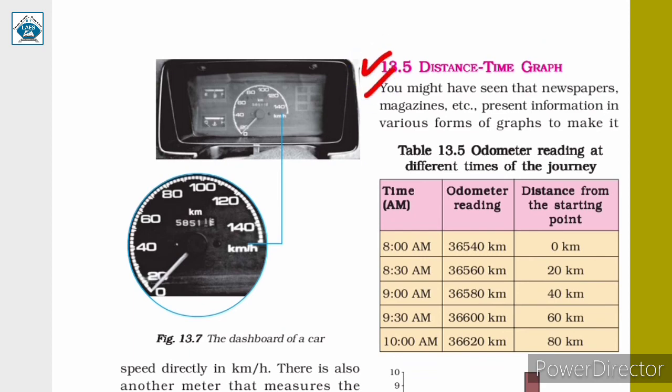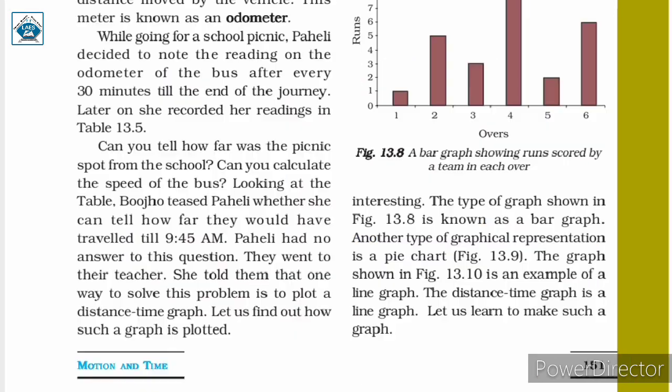Newspapers, magazines, etc. present information in various forms of graphs to make it interesting. The type of graph shown in figure 13.8 is a bar graph. Another type of graphical representation is a pie chart, shown in figure 13.9. The graph shown in figure 13.10 is an example of a line graph. The distance-time graph is a line graph.